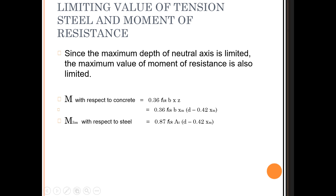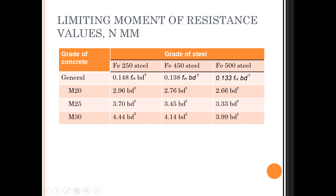As per IS 456:2000, the limiting moment of resistance formulas are: for Fe 250 steel — 0.148 × f_ck × b × d²; for Fe 415 steel — 0.138 × f_ck × b × d² (note: the slide incorrectly shows 450 — this should be 415, as Fe 450 does not exist in Indian IS code); and for Fe 500 steel — 0.133 × f_ck × b × d². The moment of resistance should not exceed these limiting values.